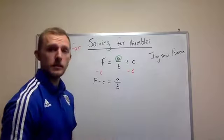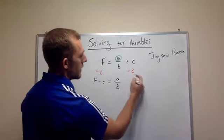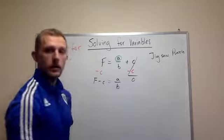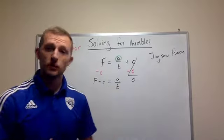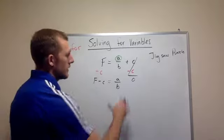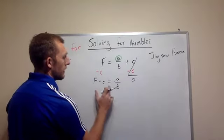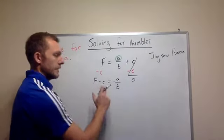And then this equals A divided by B. The reason why we subtract C is because we're always aiming to get this equal to zero. So right now we have A over B plus zero, but I don't need to write that. I need this A divided by B equals F minus C.